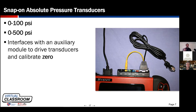On some scopes, we can put the scope in current reading mode and it does the math for us. But not every scope has that ability, meaning you'd view an amp probe's output only as a voltage scale and do the conversion yourself. For instance, a common conversion for some high-amp probes: every one millivolt of output equals one amp of current flow — so 100 millivolts equals 100 amps. The same process applies to pressure transducers if your scope doesn't do the math for you.